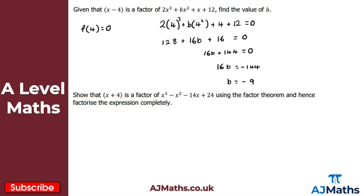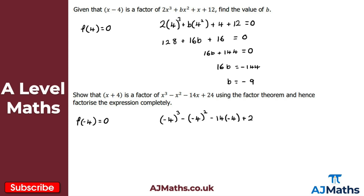Let's take a look now at the second practice question. This one is a little bit different: we want to show that x plus 4 is a factor, and then factorize the expression completely. So for the first part, by the factor theorem f of minus 4 is equal to 0. We get minus 4 cubed, minus minus 4 squared, minus 14 lots of minus 4, plus 24 — and by the factor theorem this should equal 0.